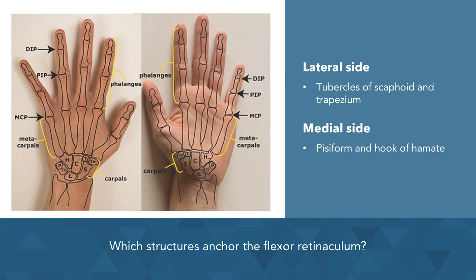So if you had a question that stated there was a fracture or space-occupying lesion in this area, you would know that it would affect the carpal tunnel and in turn cause signs and symptoms consistent with carpal tunnel syndrome. Do you know what those signs and symptoms are?